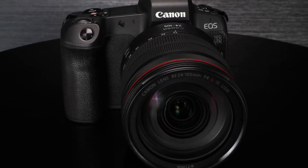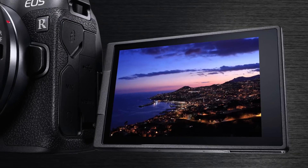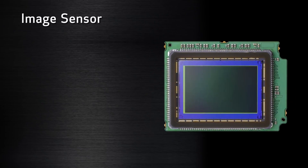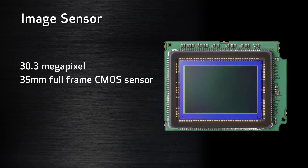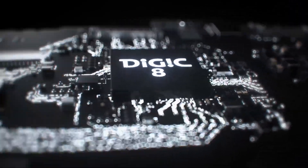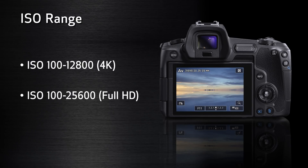The Canon EOS R is compact, lightweight, and mirrorless with a fully adjustable LCD monitor with touchscreen operation. At the heart of the EOS R there's a 30.3 megapixel full-frame CMOS sensor — approximately 36 by 24 millimeters — and it uses the latest Digic 8 image processor for high sensitivity performance using ISOs from 100 to 12,800 for 4K or 100 to 25,600 for full HD.